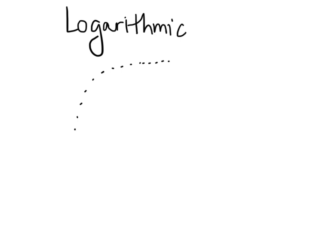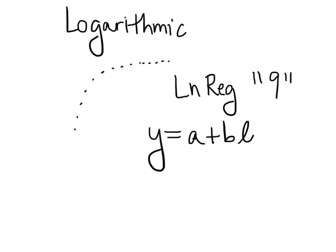If you're using the Texas Instruments calculator, you're going to want to use the option of LNREG, which stands for natural log technically. That is option number nine. It's going to give you an equation of the form Y equals A plus B LN of X.